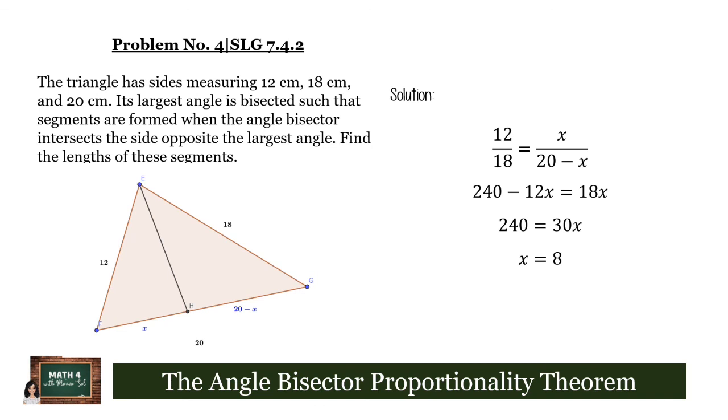Finding the length of the other segment, which measures 20 minus X, it will now be 20 minus 8, and that is 12.